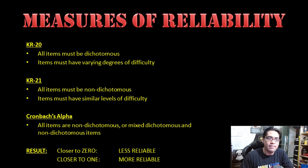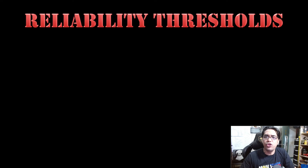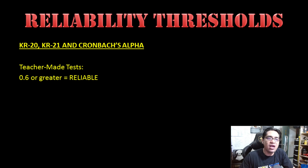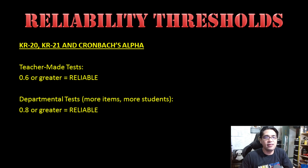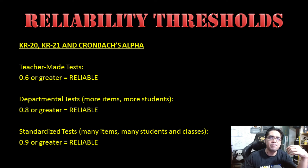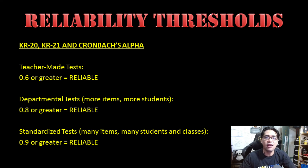After applying KR20, KR21, or Cronbach's alpha, you will get a result between 0 and 1. The closer the result is to 0, the less reliable the test. The closer it is to 1, the more reliable it is. For teacher-made tests — shorter tests for smaller classes — a result of 0.6 or greater is considered acceptable. For departmental or batch-wide tests — longer tests for multiple classes — 0.8 or greater is acceptable. For large standardized tests with thousands of students, 0.9 or greater is considered acceptable.